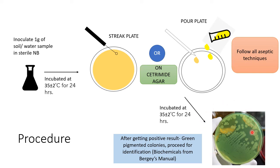Suppose this is the result of your streak plate — you can see two types of colonies growing with good isolation, and the color of your cetrimide agar has turned green. This indicates a positive result of Pseudomonas growing on your plate with green pigmented colonies, but you need to proceed further for identification and perform biochemicals by referring to Bergey's manual. If you get two types of colonies, subculture both and test which is gram-negative and shows green pigment on another cetrimide agar plate. The one showing green pigment is your Pseudomonas culture.